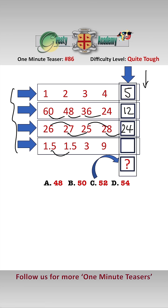Fourth sequence: one half, one half, three, nine. We multiply by one, we multiply by two, we multiply by three, so here we should multiply by four.